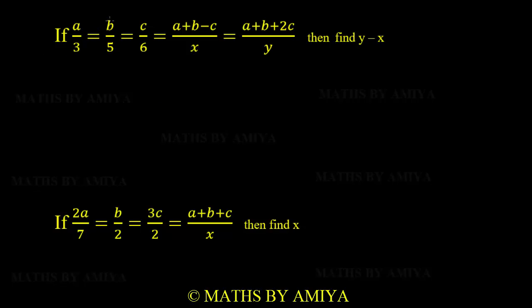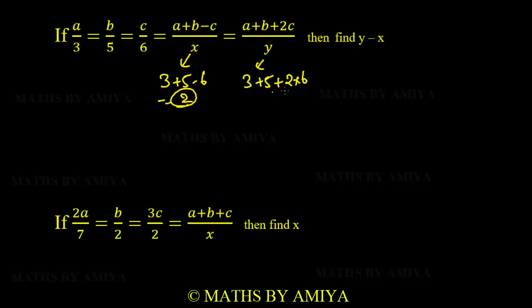For question 1: a/3 = b/5 = c/6 = (a+b-c)/x. For x, we need a+b-c = 3+5-6 = 2. For y, we need a+b+2c = 3+5+2×6 = 8+12 = 20. And y-x = 20-2 = 18.